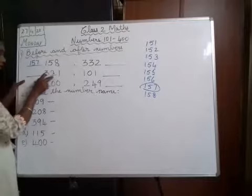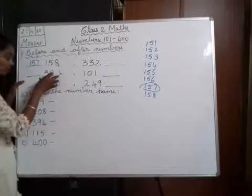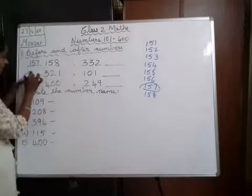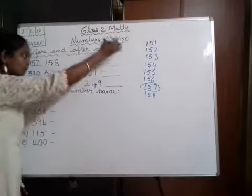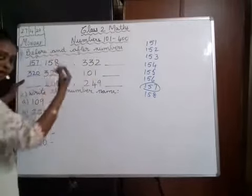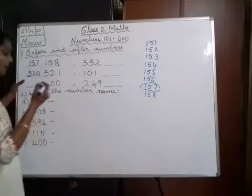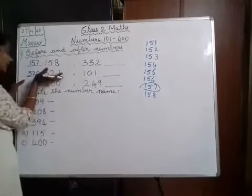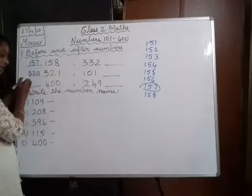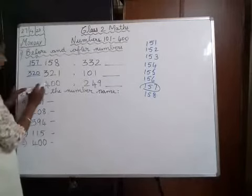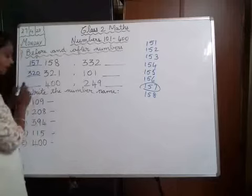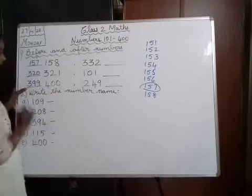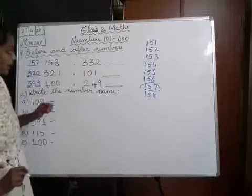Next, 321. What is before 321? 320. Same way, you say from 320, 321, 322, 323 — so before 321, 320 will come. Now, before 400 will be 399.